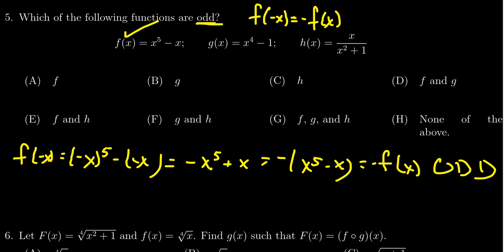If we look at g of x, we need to look at g of negative x. We're going to get negative x to the fourth minus one. Like I said a moment ago, if you take a negative number to an even power that will give you a positive, so this becomes x to the fourth minus one, which is the same thing as g of x. This indicates to us that g is an even function. We're not looking for even functions, so we're going to remove g of x from consideration.